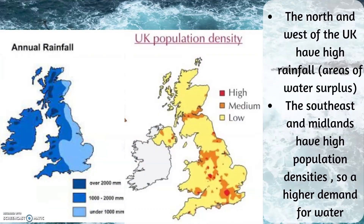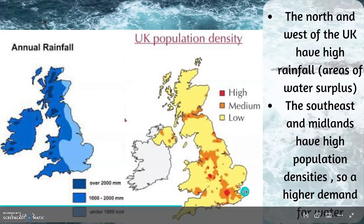The north and west of the UK have high areas of rainfall — areas of water surplus. The south east and midlands have high population densities, so a higher demand for water.